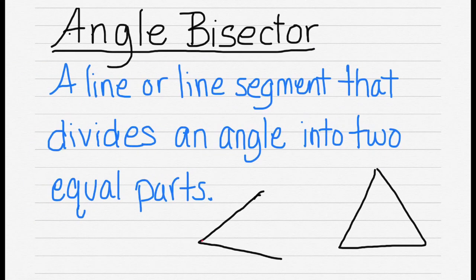An angle bisector is a line or line segment that divides an angle into two equal parts. In the first diagram, we draw a ray in the middle of the angle and divide the two parts into two equal parts. In the triangle, we draw a line from the vertex, and we indicate that both sides of the angle are equal.